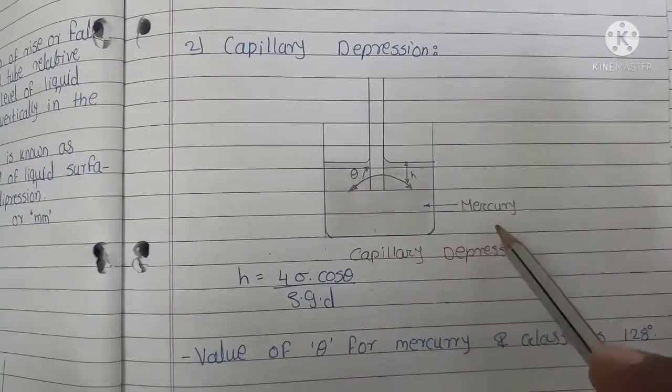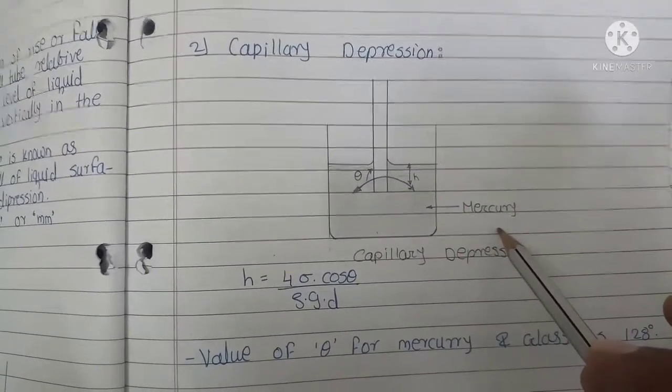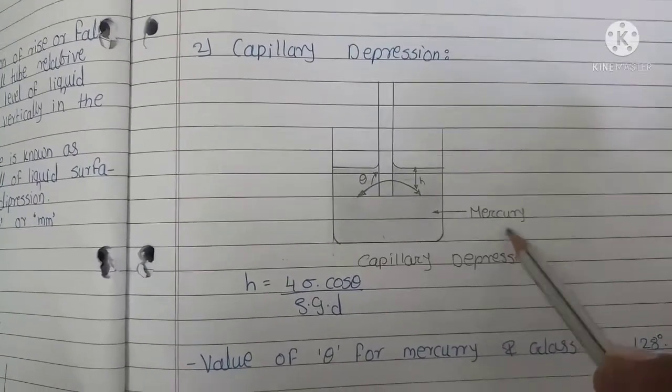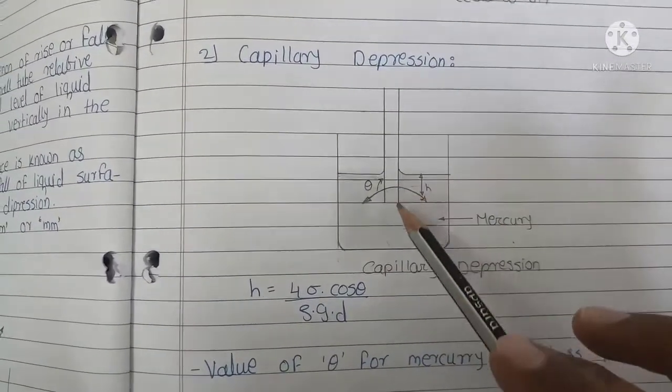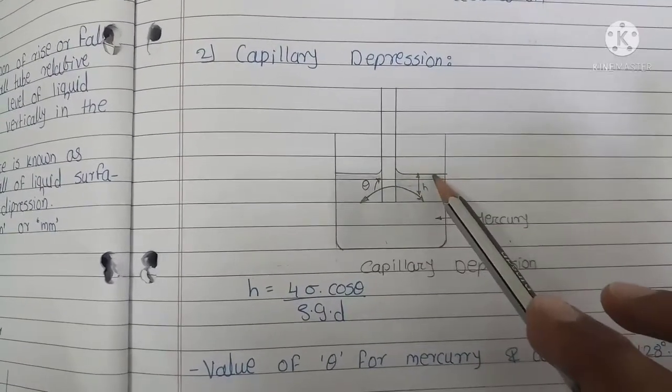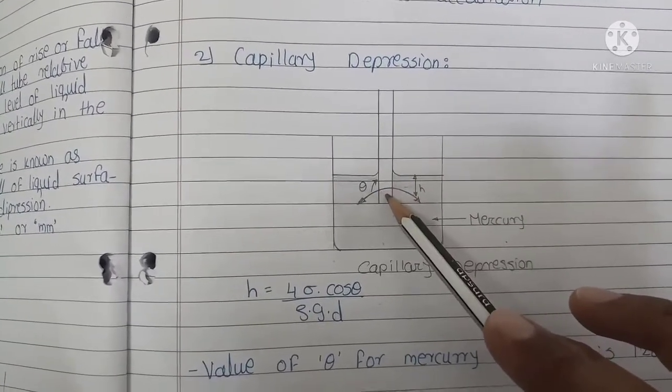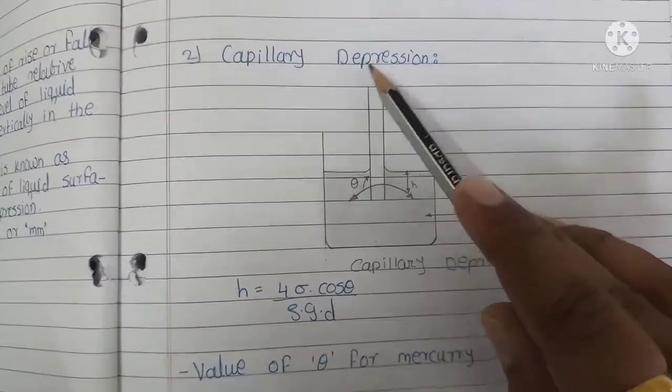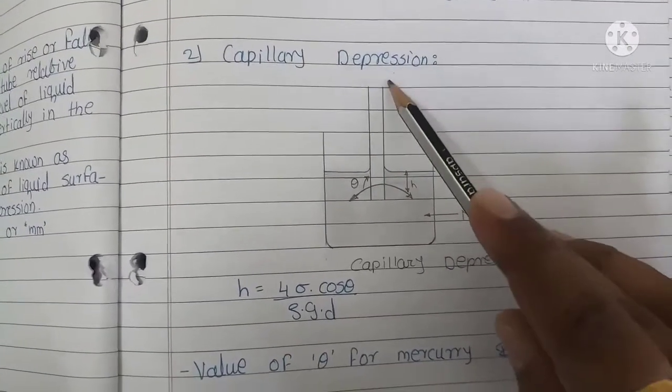This is the capillary fall that occurs with mercury. The density is 13,600 kg per meter cubed. When we insert the tube in the mercury, the mercury level in the tube is below the general level. This is capillary depression or capillary fall.